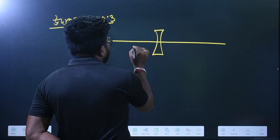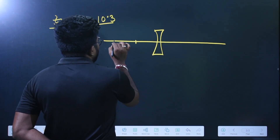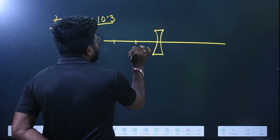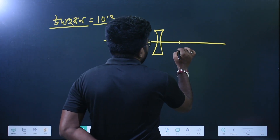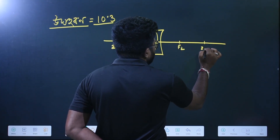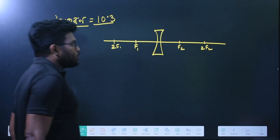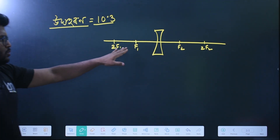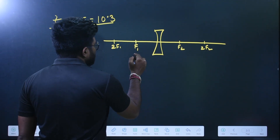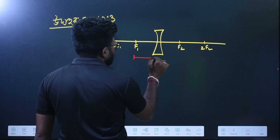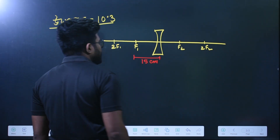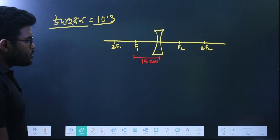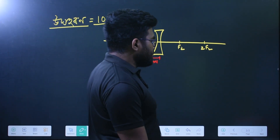We have the lens. The lens is not quite focused. I have more focus on the lens. Do you see this lens? The lens is not quite focused. I have 5 cm and 0.4 cm.